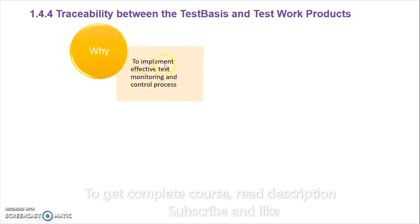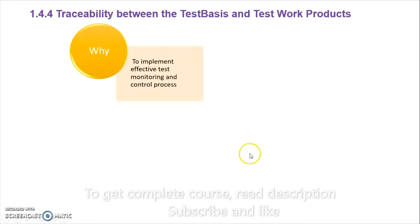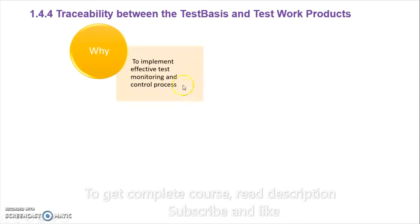The first reason is to implement an effective test monitoring and control process. Traceability is very much required to make the monitoring and control phase effective. For example, if we had six requirements, in the monitoring phase we can check whether we are working on all six requirements and whether we will be able to complete them. With traceability, we know for how many requirements we have written test cases and how many are still pending, so monitoring is improved.